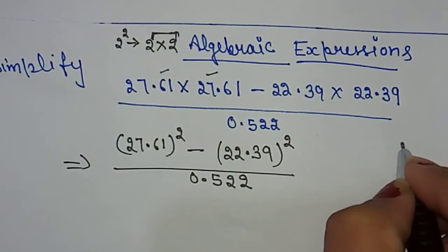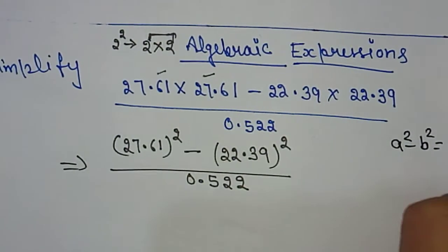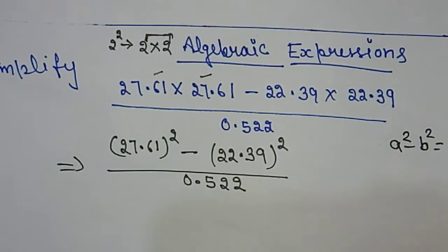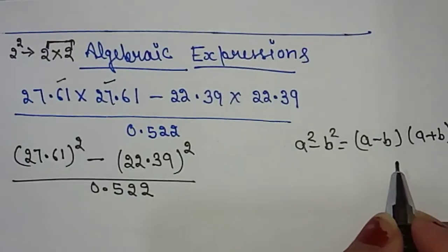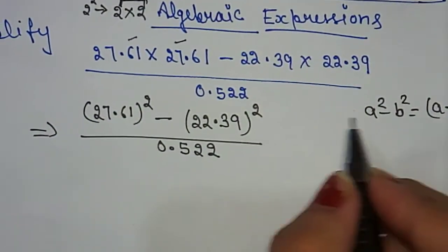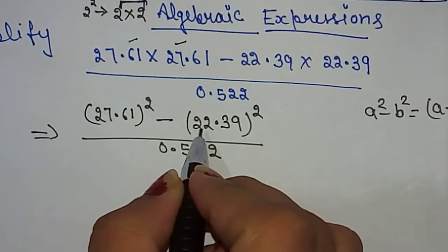The identity becomes a² - b², that is (a - b)(a + b). I have already discussed this in our previous video. Now the question is: first we have to subtract these two numbers, and then we add these two numbers.